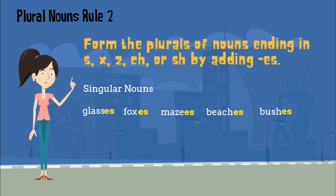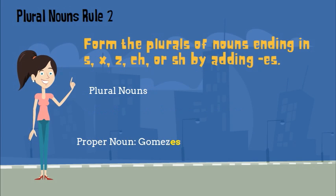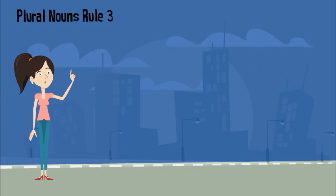Proper nouns usually follow this rule too. So if you have a name such as Gomez, you would add ES to the end when making it plural. Here are some more examples: the Rosses, the Birches, the Walshes, the Joneses.